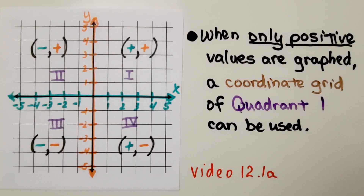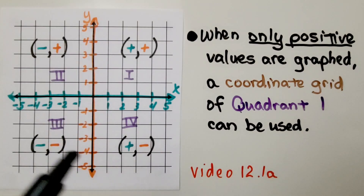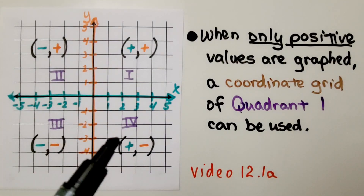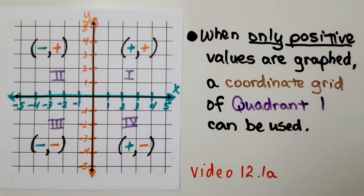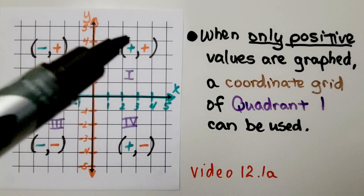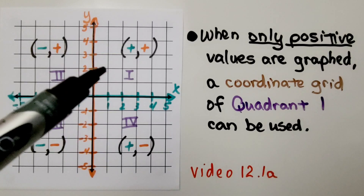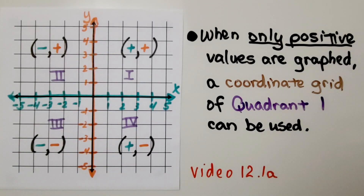We've learned about the quadrants of a coordinate plane in video 12.1a, which is linked in this description. The quadrants are labeled 1, 2, 3, and 4, usually written with Roman numerals. You can remember which quadrant is which because the quadrants make the letter C for coordinate. We start in the first quadrant and come around. When only positive values are graphed, a coordinate grid of quadrant one can be used.